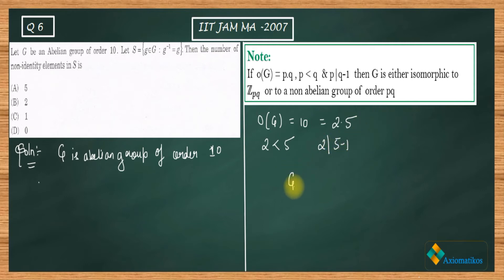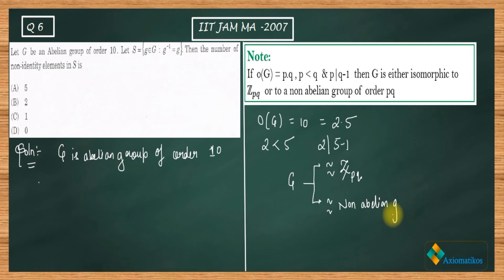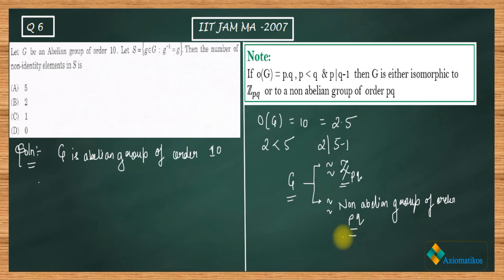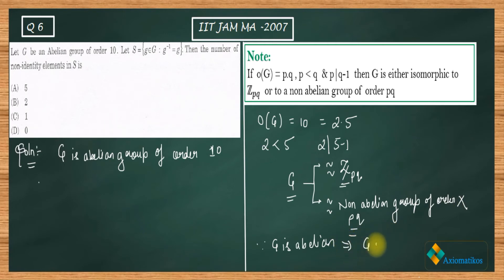Therefore we can say that G is either isomorphic to Z_pq, or G is isomorphic to a non-abelian group of order pq. Now since it is already given that G is abelian, we can cancel out the non-abelian possibility. Therefore G is isomorphic to Z_pq, which means it is cyclic.